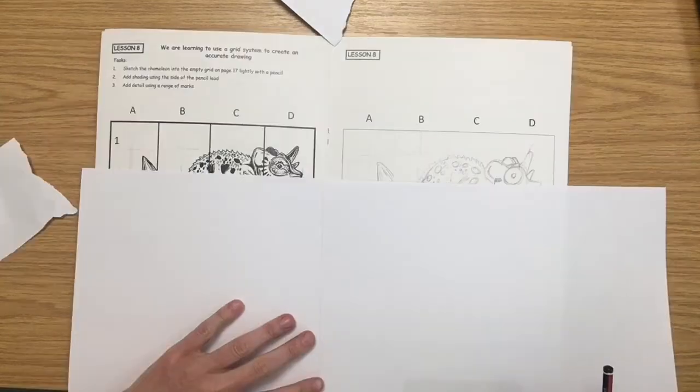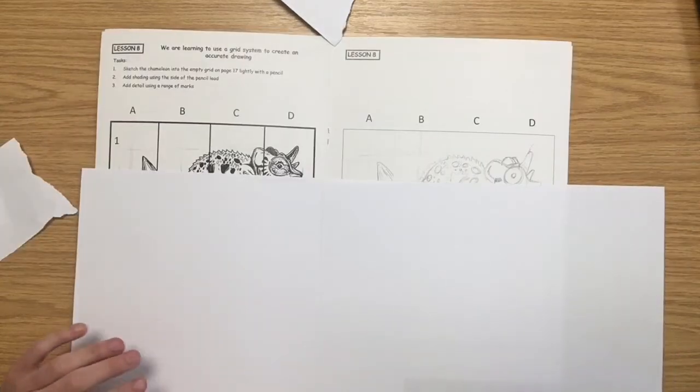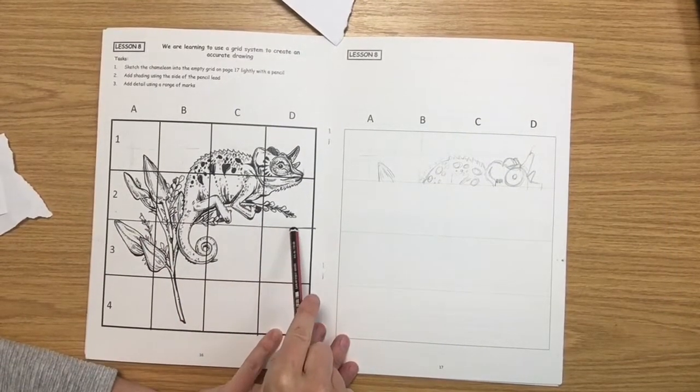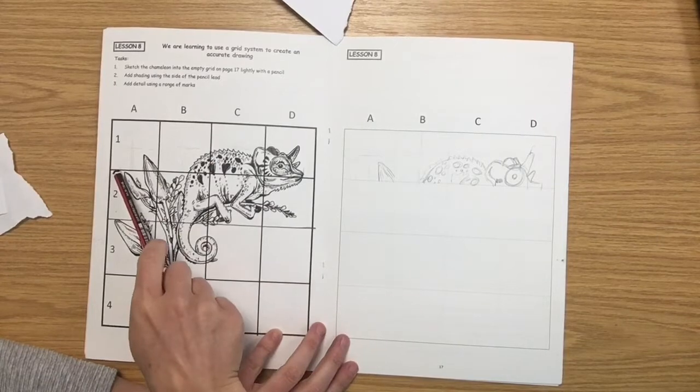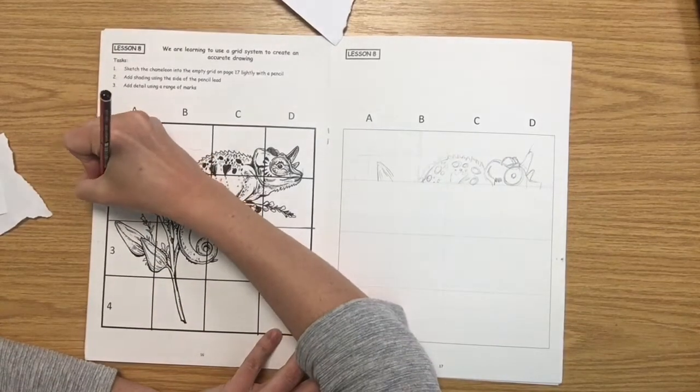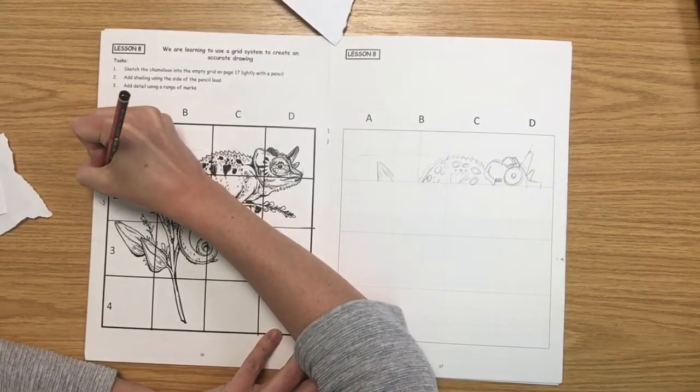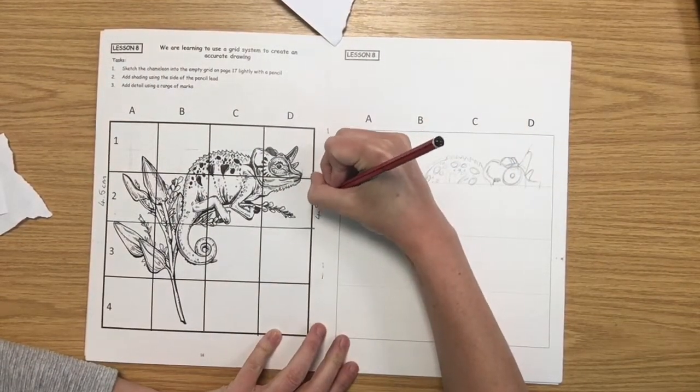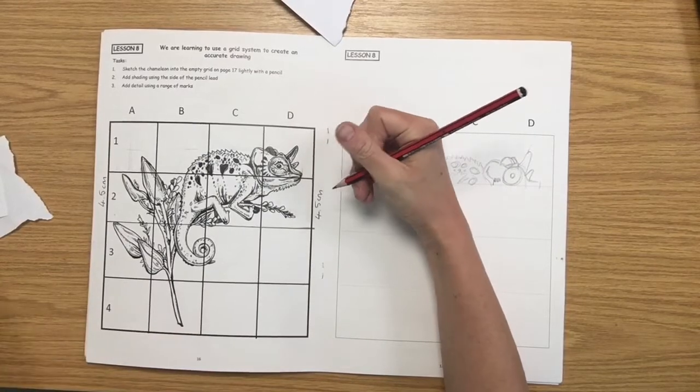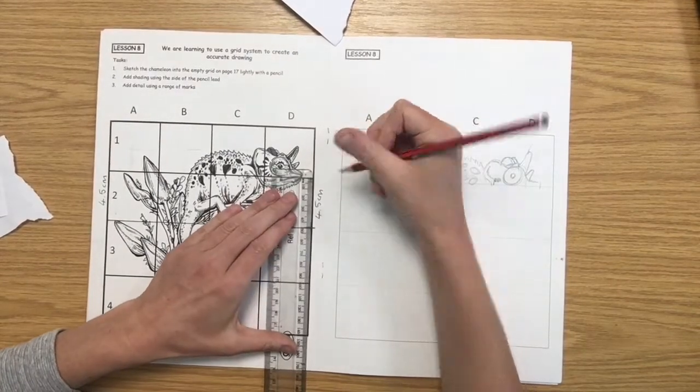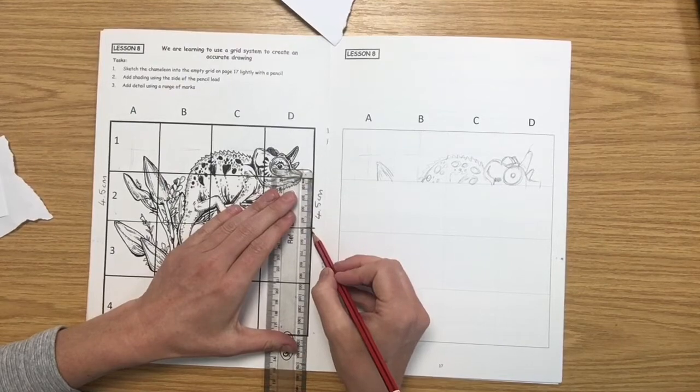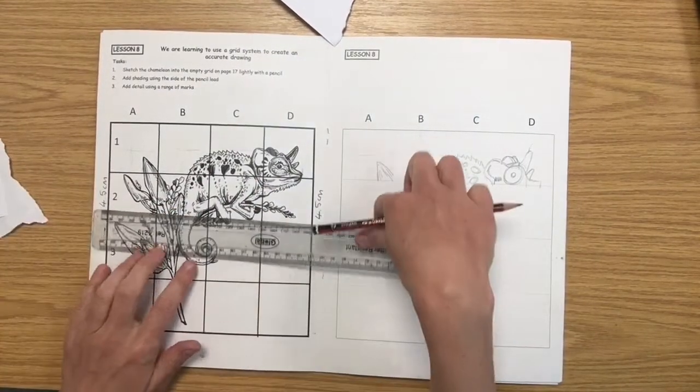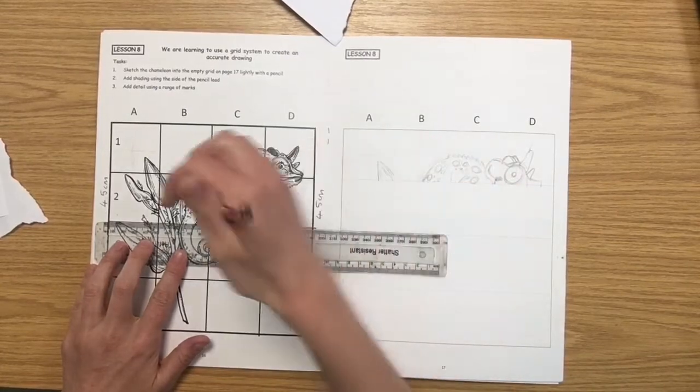I've nearly finished my top row and then I realized that the line between two and three on page 16 was missing. So you need to measure four and a half centimeters between box one and box two and draw in. Find four and a half centimeters, make a little mark, do the same on the other side, and then draw a line across.